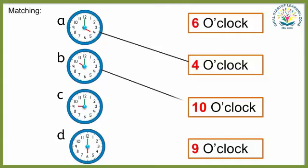Clock B — it is ten o'clock. Clock C — yes, it is nine o'clock. Clock D — it is six o'clock.